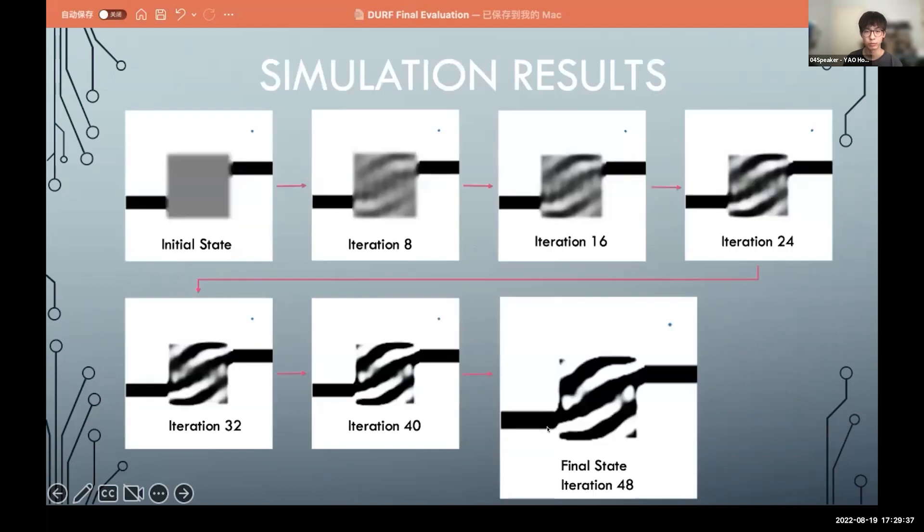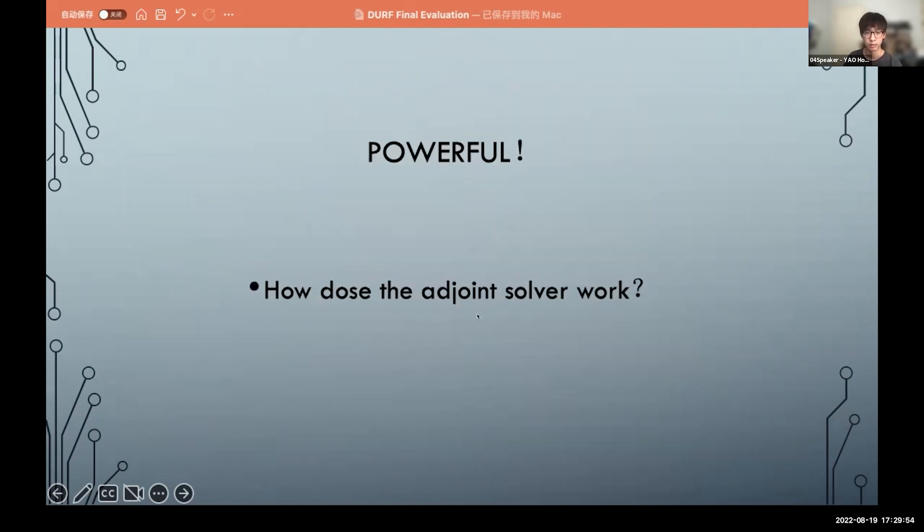Now here is a simulation result. We can see that in the initial state there is nothing in the design region, no waveguide. But after 48 times of iterations, it gets these results and the waveguide is looking like this, so it's very powerful, right?